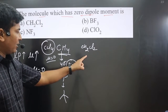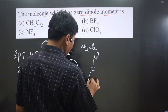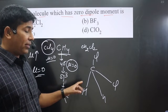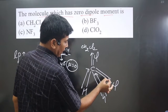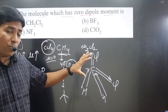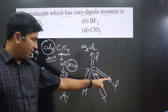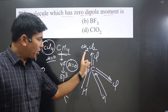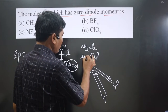CH₂Cl₂ has four sigma bonds, sp³ hybridization, and tetrahedral geometry. If we draw the tetrahedral structure, carbon is more electronegative than hydrogen, so dipole moment vectors point accordingly. Some arrow marks go one direction while others go another direction — they add up and do not cancel completely. 100% cancellation does not occur, so some polarity remains and the dipole moment of CH₂Cl₂ is non-zero.